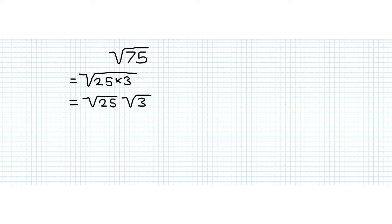We know that the square root of 25 is 5, which gives us 5 root 3. And this is the simplified form, so this will be our answer.